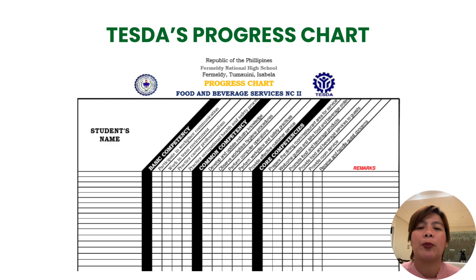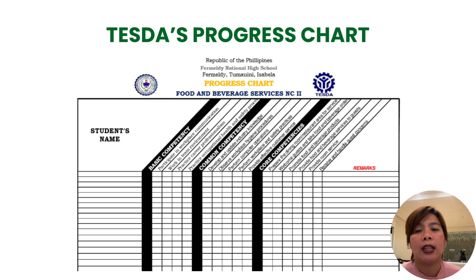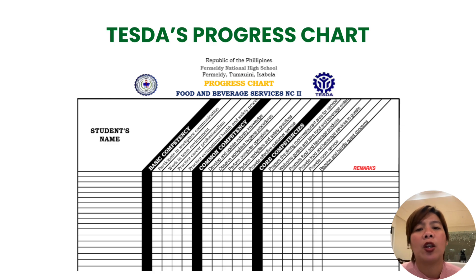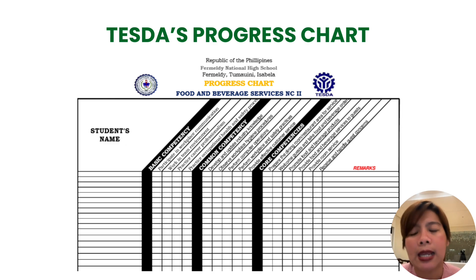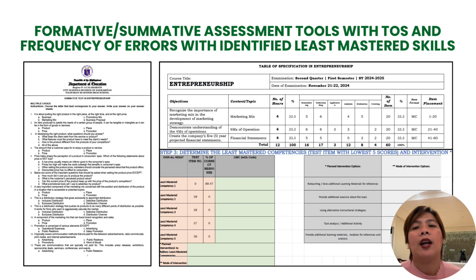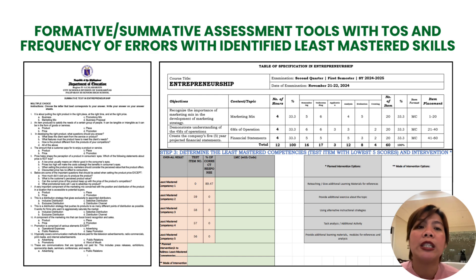I also use TESDA's progress chart as an example — this is something we can personally practice in our own classroom. It's a progress chart where all the competencies are listed, and you write the student's name. Every time a student completes a specific competency, you tick the box. This is actually printed large and posted on the wall for students to see and monitor their own progress.